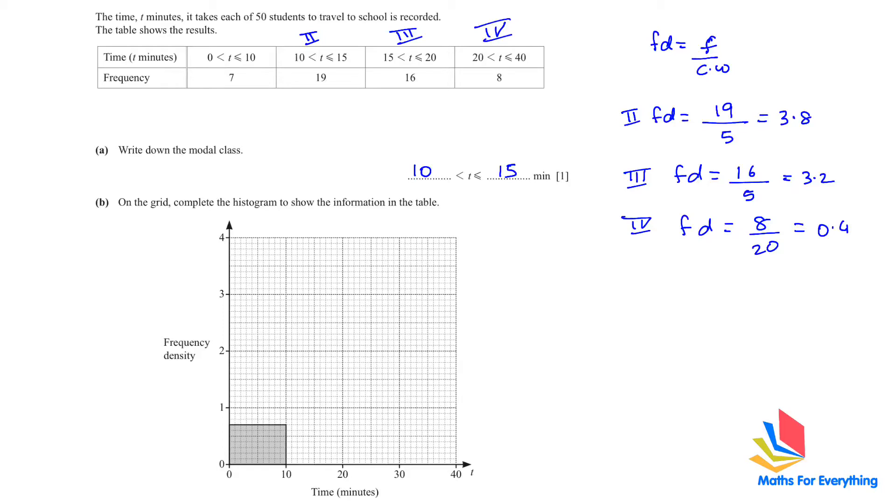We can see that 3.8 is here, so we'll make that bar. We'll draw the lines and then the third one is 3.2. 3.2 is here and 0.4 is here. Now I'll just make the lines. So the bars are drawn now, we completed the histogram.